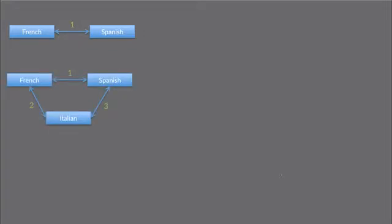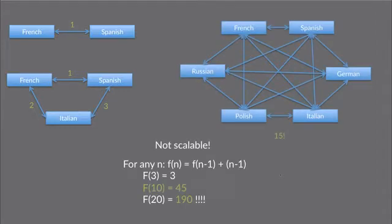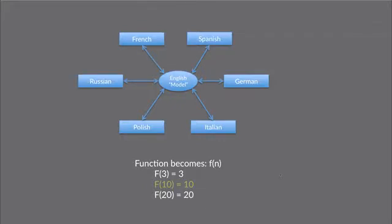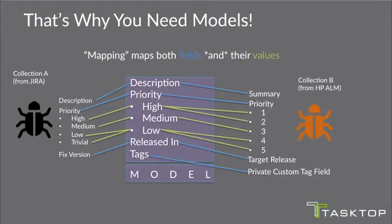If you have two people speaking two different languages, you need exactly one translator to facilitate their communication. If you have three, you need exactly three. But when you start to introduce six, ten, or twenty, it doesn't scale to have direct translations between each individual system. So we've introduced the concept of a model, where everyone speaks to the model, and the model takes care of translating to the other side. That allows for scalability — you can have ten systems connected to ten other systems as a linear function. That's why you need models.